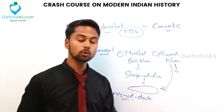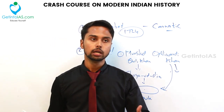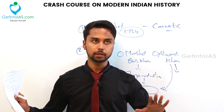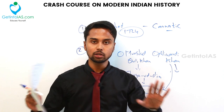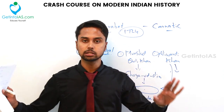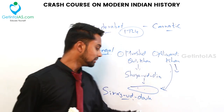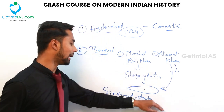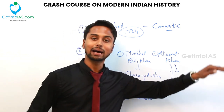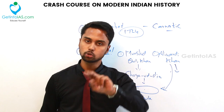Siraj-ud-Daulah is related to the Black Hole Episode — in a room with no ventilation, Siraj-ud-Daulah made about 50 English officials stay there, where they suffocated and died. This led to the important Battle of Plassey. Bengal ended with Siraj-ud-Daulah at the Battle of Plassey.